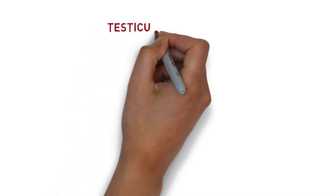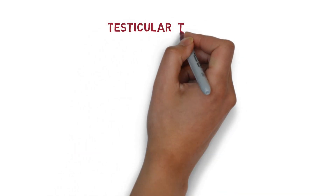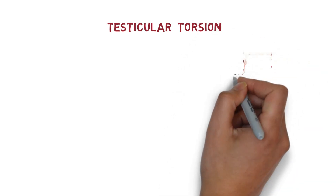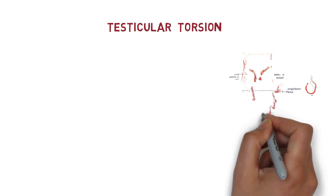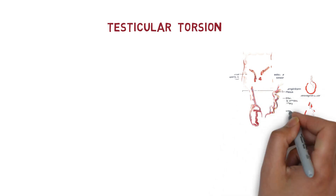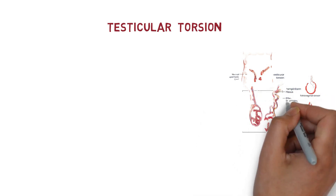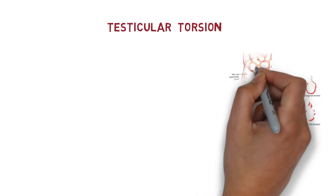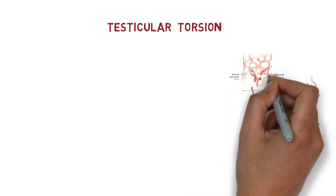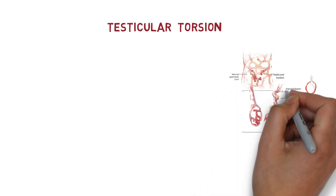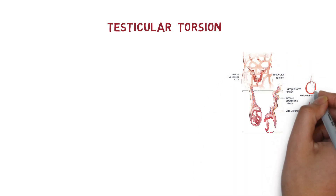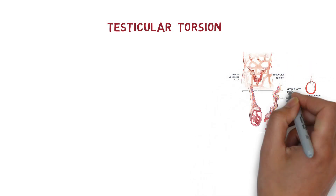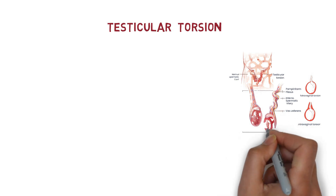Welcome back medicos. Today we will discuss a very important topic: testicular torsion. It is important because it occurs in about one in four thousand males aged less than 25 years and accounts for about 25 to 35 percent of acute pediatric scrotal disease.